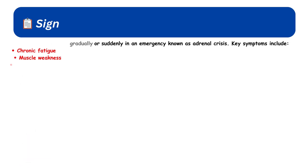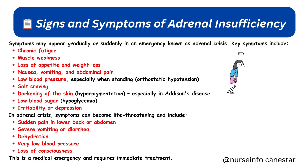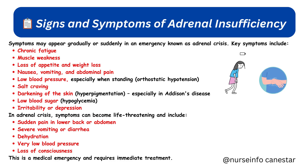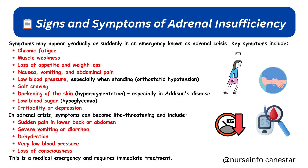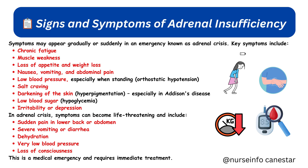Symptoms may appear gradually or suddenly in an emergency known as adrenal crisis. Key symptoms include chronic fatigue, muscle weakness, loss of appetite and weight loss, nausea, vomiting, and abdominal pain, low blood pressure especially when standing (orthostatic hypotension), salt craving, darkening of the skin (hyperpigmentation) especially in Addison's disease, low blood sugar (hypoglycemia), and irritability or depression.